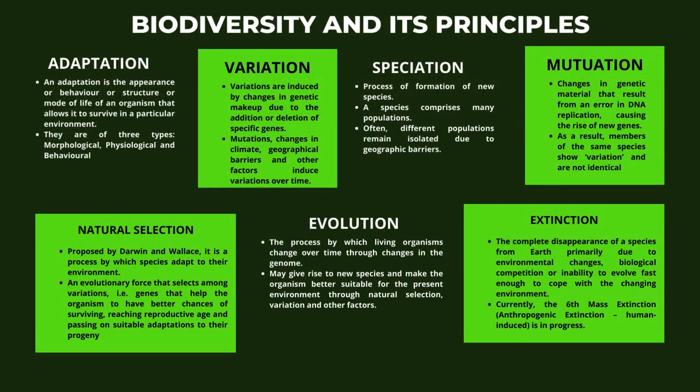Now let us look at the principles of biodiversity. Adaptation is the appearance, behavior, structure, or mode of life of an organism that allows it to survive in a particular environment. There are three types: morphological, physiological, and behavioral. Second comes variation, which is induced by changes in genetic makeup due to the addition or deletion of specific genes. Mutations, changes in climate, geographical barriers, and other factors induce variations over time.